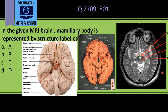Posterior to the mammillary body is the midbrain — this is the midbrain, where this part is the substantia nigra. Similarly, this part is also substantia nigra. Medial to the substantia nigra is the red nucleus, so that is the red nucleus, and this structure here is also the red nucleus.